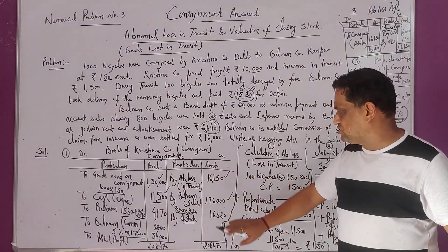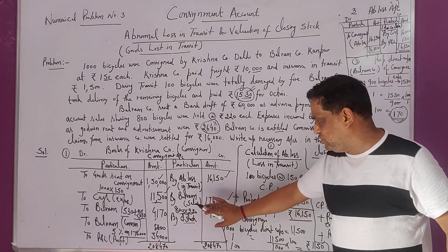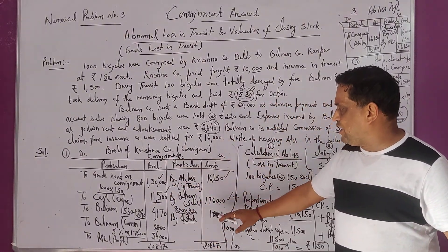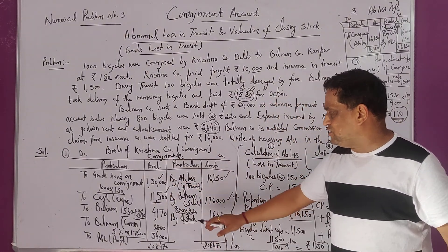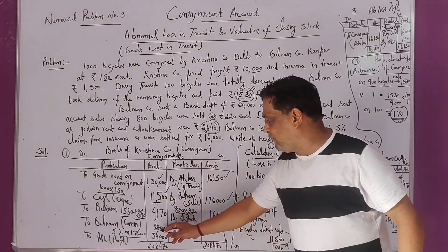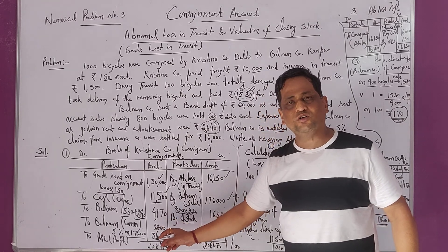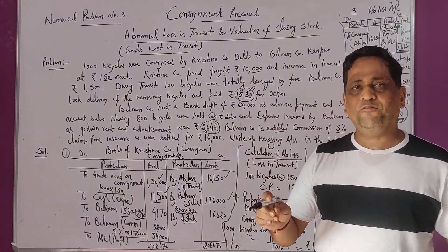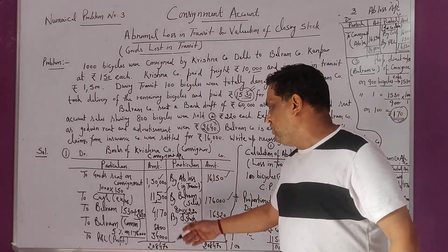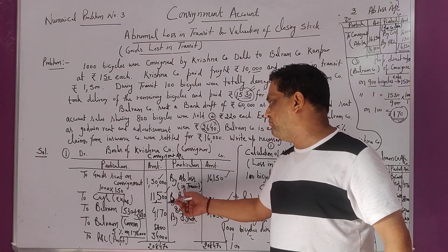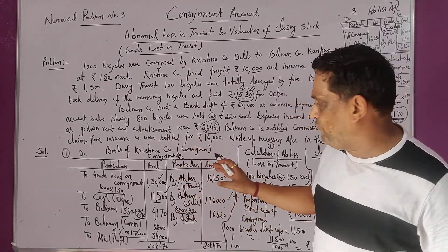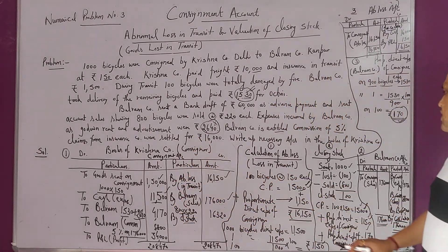Ab hamare consignment account mein abnormal loss bhi daal diya, sale bhi daal diya, closing stock bhi daal diya, commission bhi le liya. Agar credit side exceed karti hai, profit banta hai Rs. 34,000 — that is the profit to Krishna & Company. Krishna Company ko profit hua Rs. 34,000 from consignment.